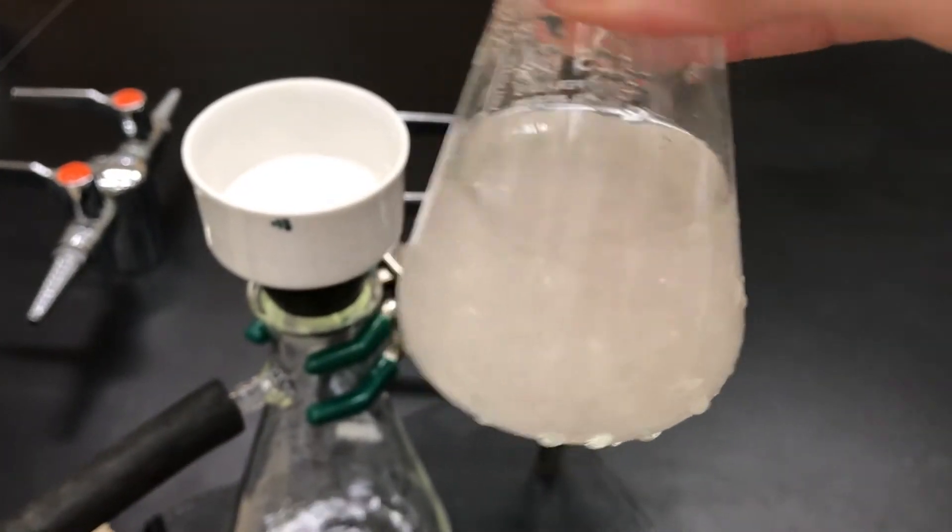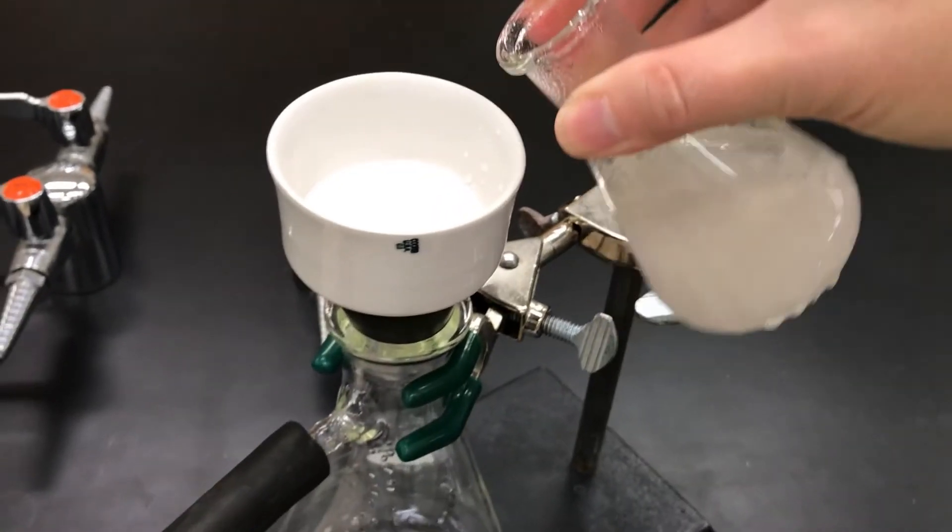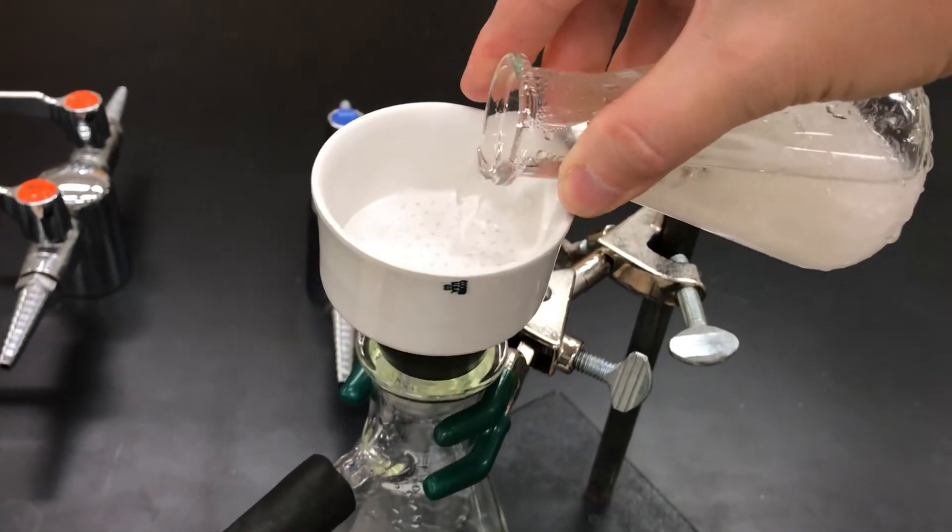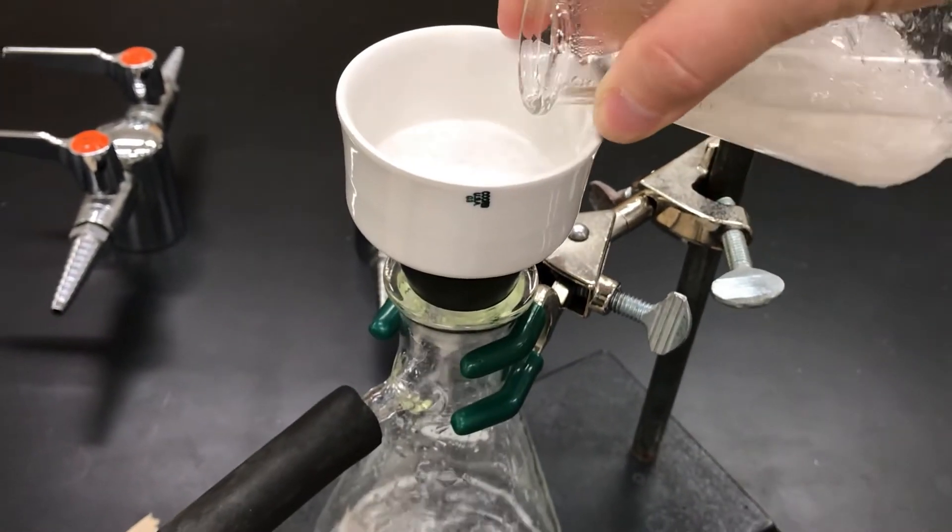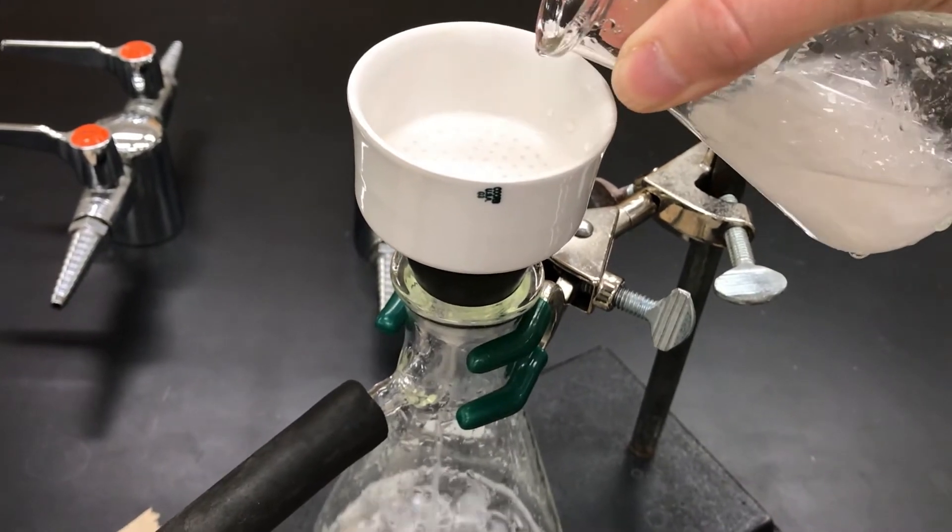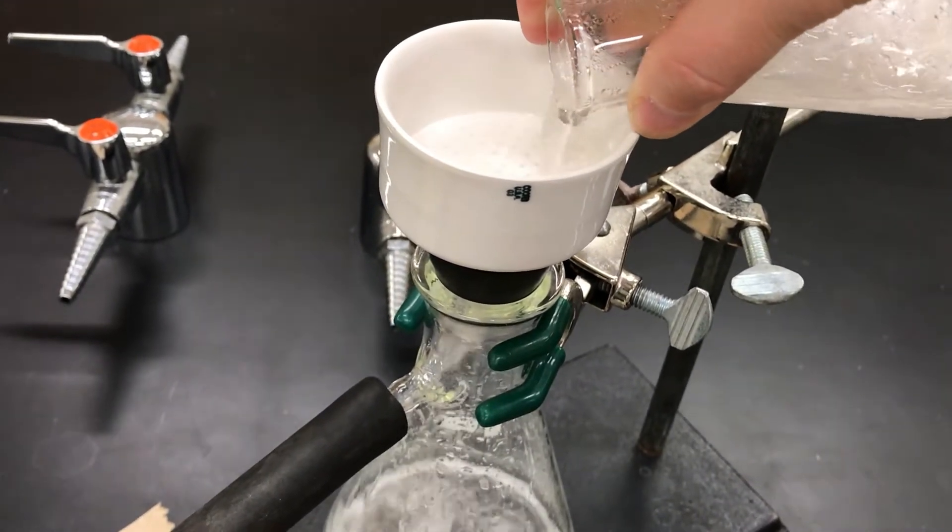So here is my solid and I'm going to pour it into the funnel in portions. The suction is then going to pull the liquid away from the solid. The solid gets trapped above the filter paper.